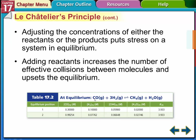So we have this equation as an example: carbon monoxide plus hydrogen makes methane plus water. The initial concentrations are shown here. So if we add a reactant — we add more carbon monoxide — we increase it from 0.3 up to almost one. What's going to happen is that carbon monoxide is going to react more with the hydrogen and create more methane and water. So the hydrogen concentration is going to go down, and the methane and water concentrations are both going to go up.